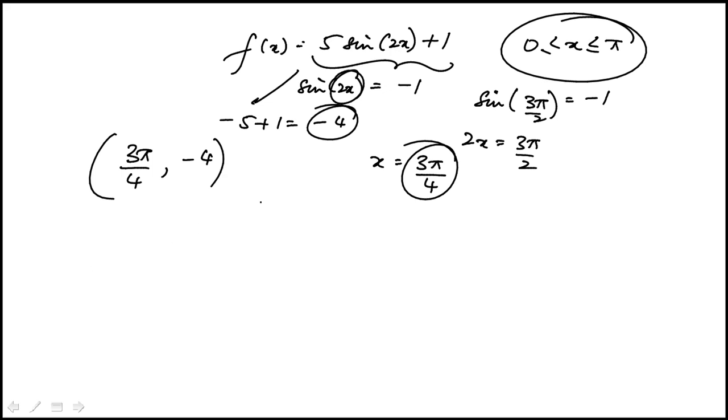The maximum would be when x is π over 4 because in that case sine 2x would be sine of π over 2 which is 1. And the maximum value would be 5 plus 1, 6. So the other point is, the maximum is π over 4, 6.